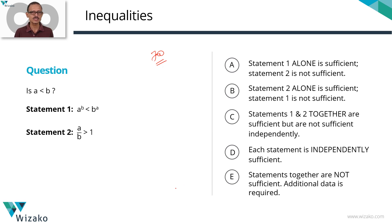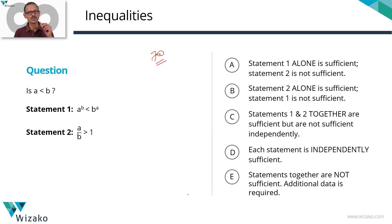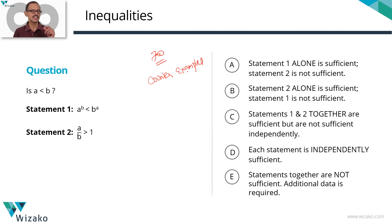It also touches upon our understanding of which numbers are larger or lesser — positive numbers, negative numbers. A little bit of number systems is also tested. The crux of solving this question involves one very important tool: the usage of counter examples. Counter examples is a very useful tool in solving a lot of data sufficiency questions, and we'll be utilizing counter examples extensively for this particular question.